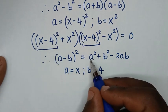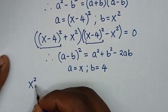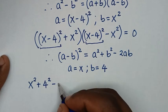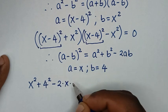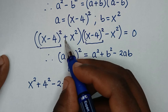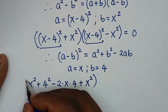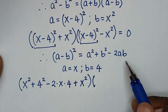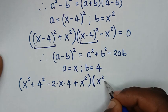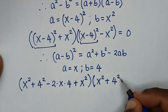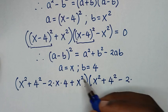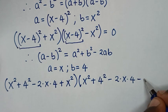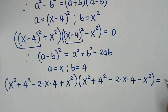From here, a squared gives x squared, plus b squared gives 4 squared, minus 2ab gives 2 times x times 4, then plus x squared. For the second bracket, expanding (x minus 4) squared again: x squared plus 4 squared minus 2 times x times 4, then minus x squared, bracket equals 0.